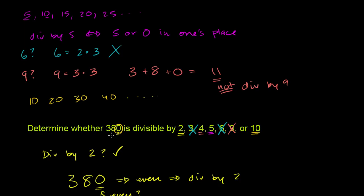380 does end with 0, or its ones place does have a 0 on it. So it is divisible by 10. So we're divisible by all of these numbers, except for 3, 6, and 9.